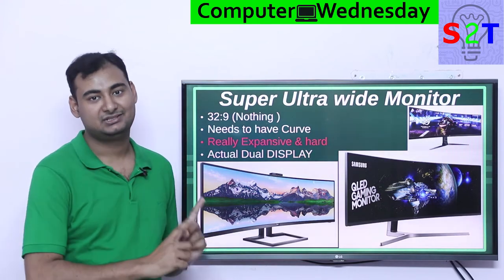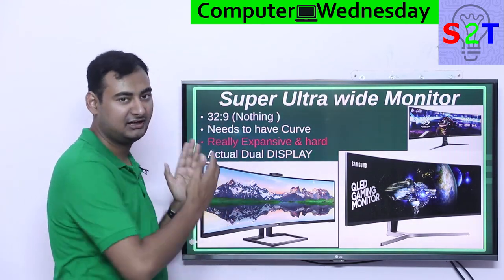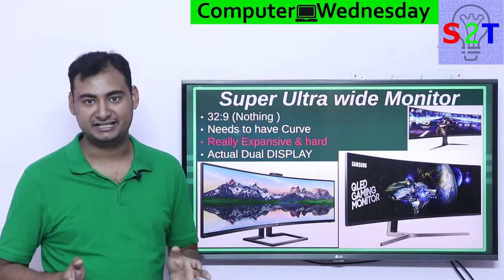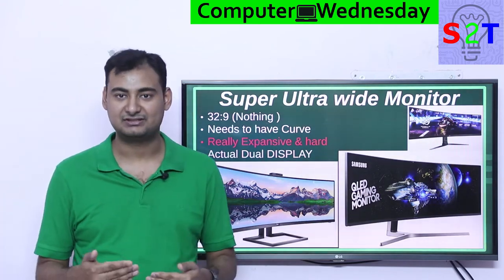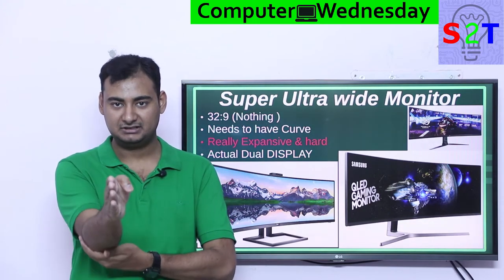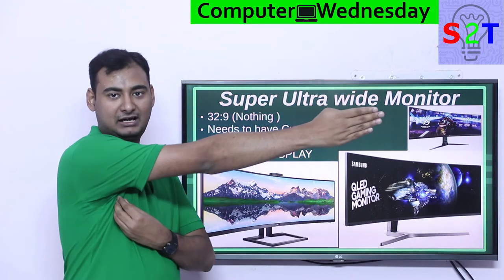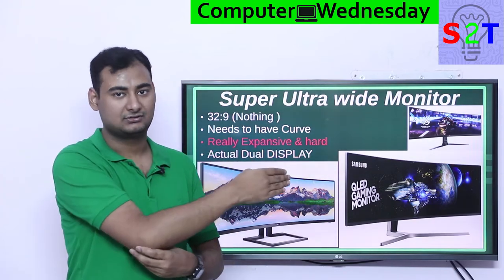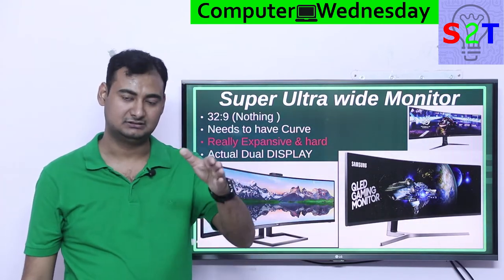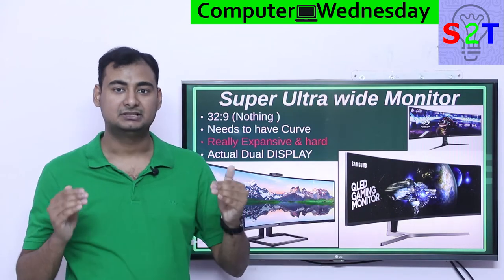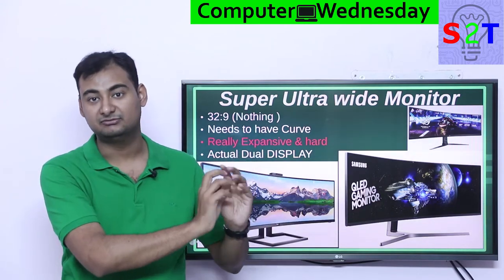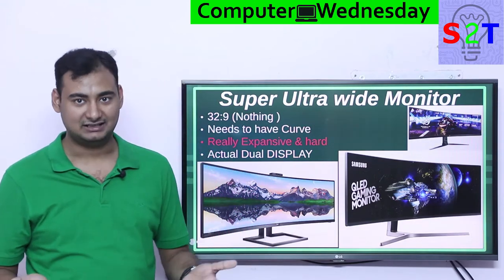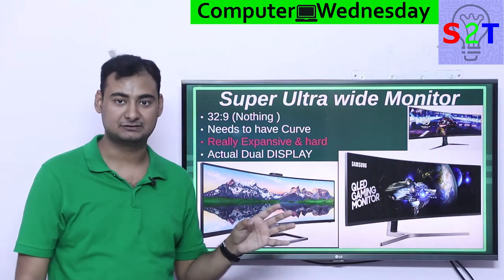However, it does need to have a curve. A 16:9 flat monitor is possible, but a 32:9 flat monitor is a nightmare. When you are sitting at a table, your center would be very close but the far sides would be extremely far apart. So they have to curve it to follow your line of sight properly. If they didn't, the corner elements would become way too hard to see — you would physically have to move your chair to see them. That defeats the whole purpose. So they have to have a curve.